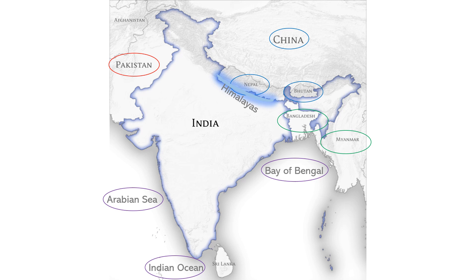Now we are talking about boundaries. India's neighbouring countries are Pakistan, China, Nepal, Bhutan, Bangladesh, and Myanmar. In the north, India is bordered by China, Nepal, and Bhutan along the Himalayan mountain range. These mountains are not only a stunning sight but also crucial for India's climate and water resources.